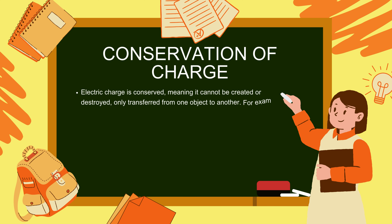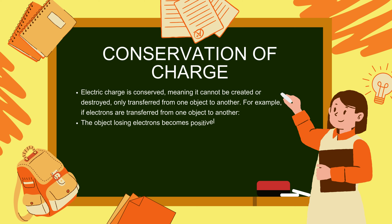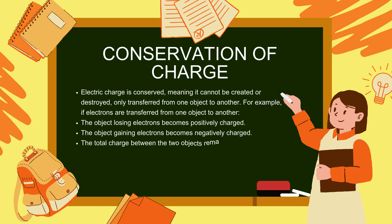Conservation of charge: electric charge is conserved, meaning it cannot be created or destroyed, only transferred from one object to another. For example, if electrons are transferred from one object to another, the object losing electrons becomes positively charged and the object gaining electrons becomes negatively charged. The total charge between the two objects remains constant. This principle is called the conservation of charge.